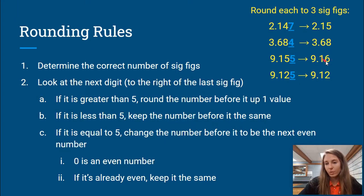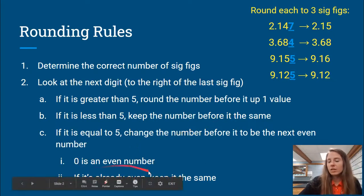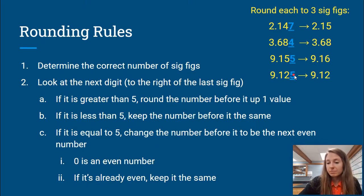So this would become 9.16. However, if the number before this five is already even, so if it's 9.12, this two is already even, so I would just leave it as is. And just remember that zero is an even number. So if the number before this, like if it were 9.105, you would keep the zero as is because that's already even.